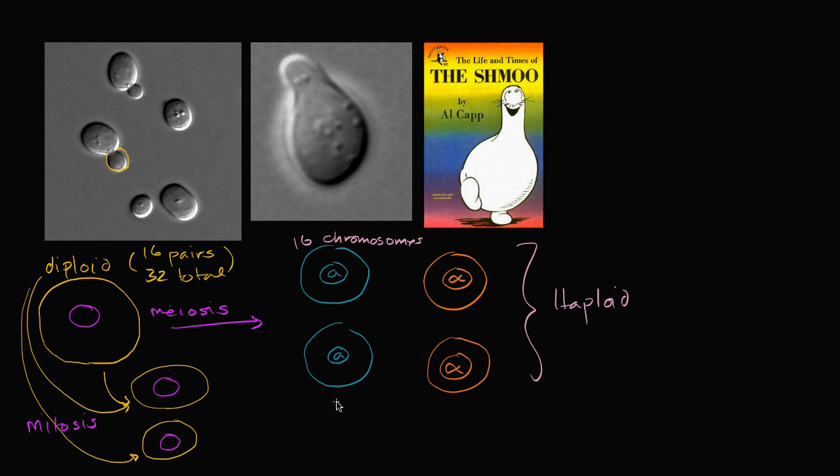So this type A cell could turn into, through mitosis, it could turn into two type A cells. So this is just all interesting background. Mitosis. So even the products of meiosis can then mitose themselves. That's all interesting.